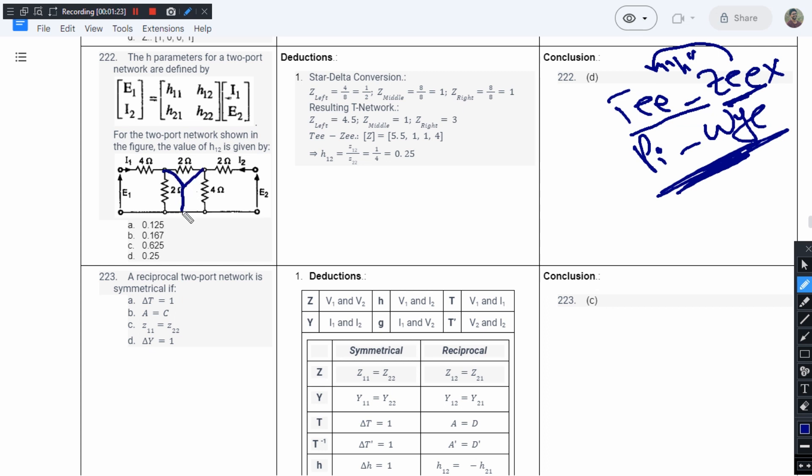The star-delta transformation is going to look something like this, and this element is going to be C. This is the formula: ZA equals ZAB times ZAC divided by ZAB plus ZBC plus ZCA.